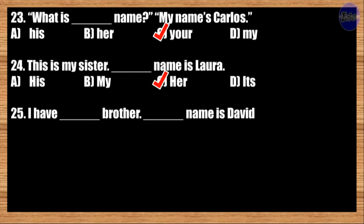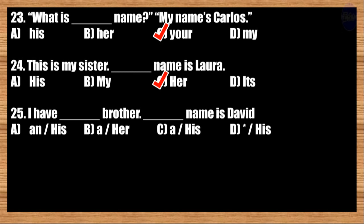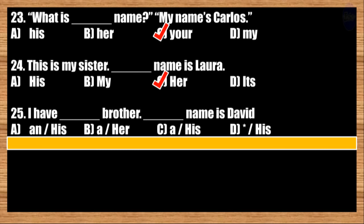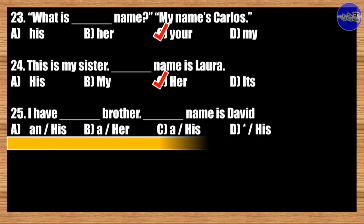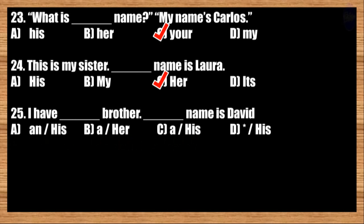Number twenty-five: I have blank brother. Blank name is David. A: an, his; B: a, her; C: a, his; D: his, his. The best answer is option C. I have a brother. His name is David.